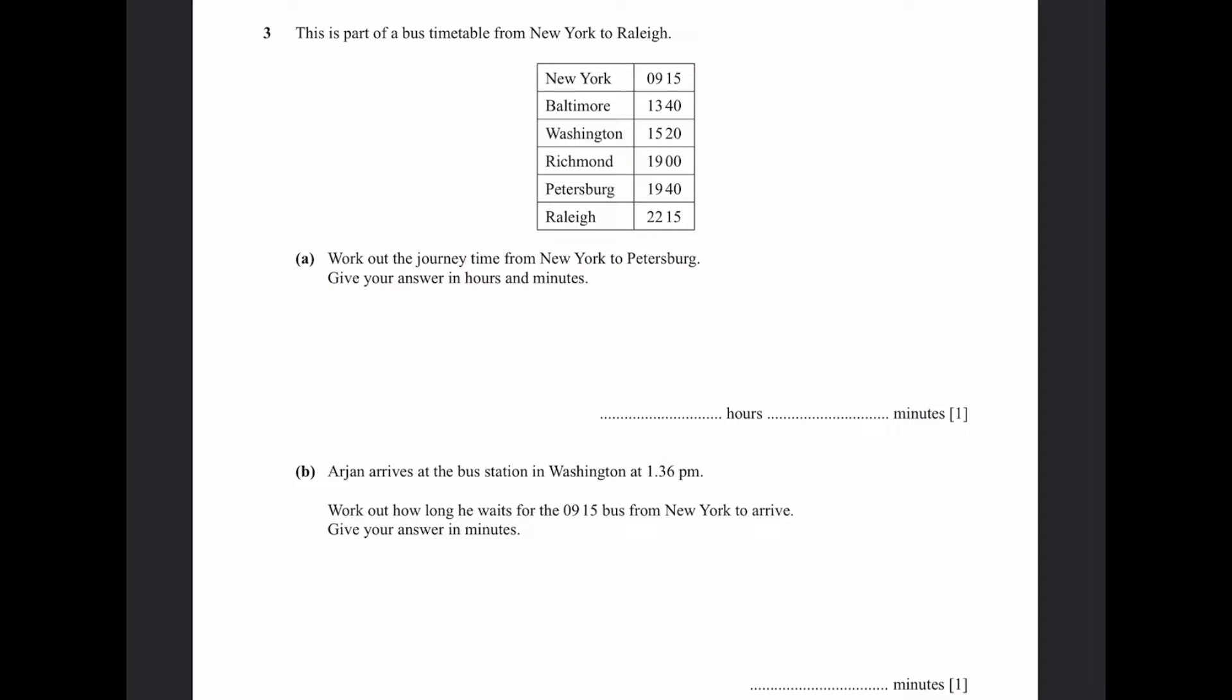Now you can go to question 3. There's a part of a bus timetable from New York to Raleigh. Part A: Work out the journey time from New York to Petersburg. Give your answer in hours and minutes. So 9:15 bus from New York reaches Petersburg at 19:40, all in 24 hour time. So we can just subtract these times to get 10 hours and 25 minutes, the journey time.